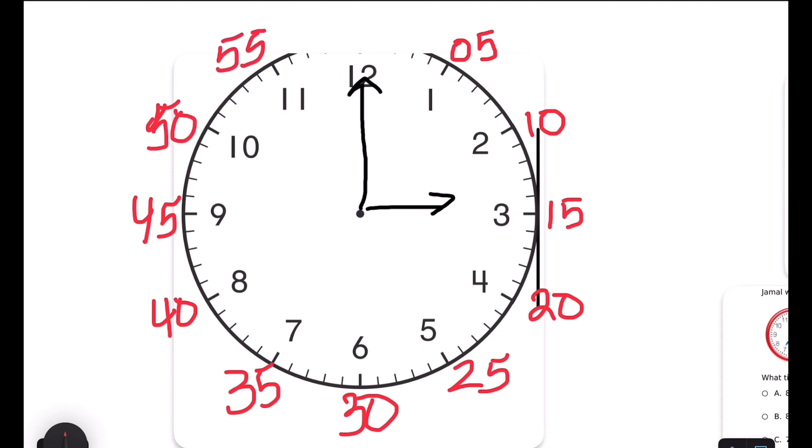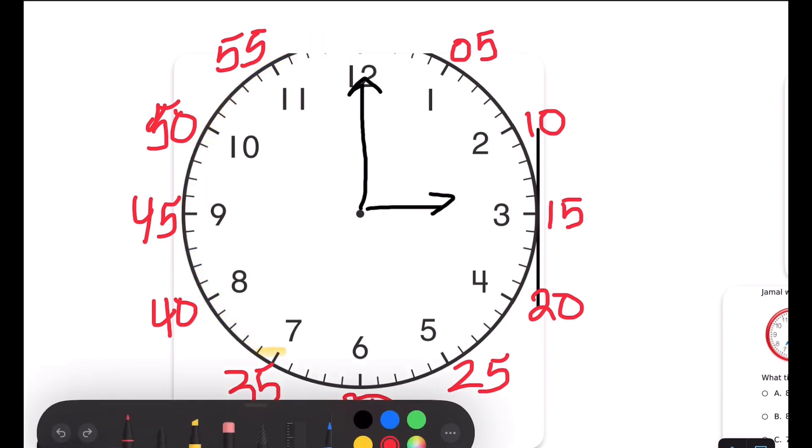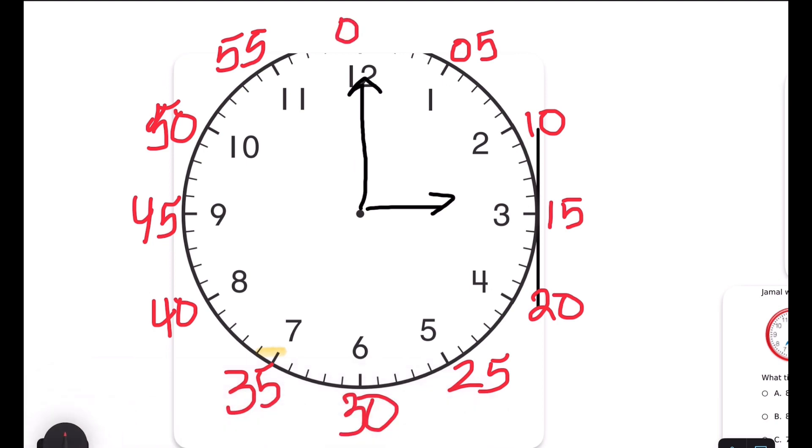And then when you add all of them up and count up by fives, when you go all the way up to the top, you should get to 60. 60 minutes in one hour. Instead of saying 12:60 or 60 o'clock, we just represent it with two zeros.